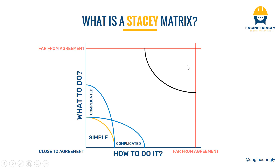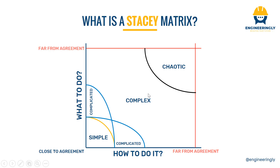If we go forward to the last points on both the Y and X axes, we have the chaotic situation. In the chaotic situation, we do not know exactly what we are doing and we don't know how to do it. These projects are really hard to manage. Projects in this quadrant have extreme uncertainty and may be in a state of crisis. There are no clear cause-and-effect relationships, and immediate action is required to stabilize the situation. Crisis management techniques and rapid decision-making are crucial.